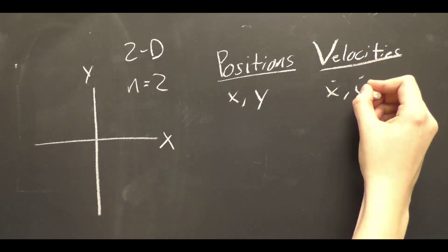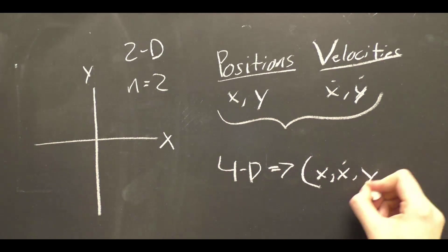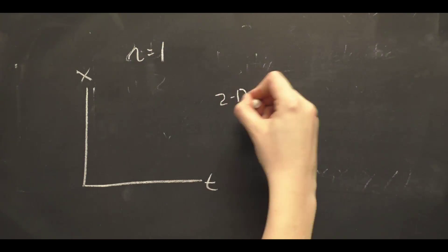So phase space is a 2n-dimensional space where each axis corresponds to one of the 2n coordinates. For a one-dimensional system, phase space is defined by the position and velocity of the particle in question.